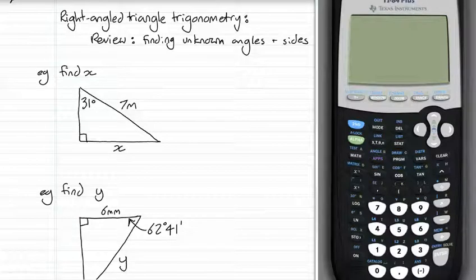Right Angle Triangle Trigonometry. A quick review of finding unknown angles and sides. Four steps every time we want to find an unknown angle or an unknown side.